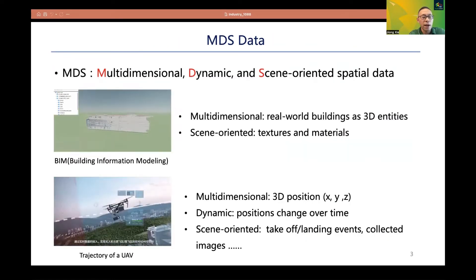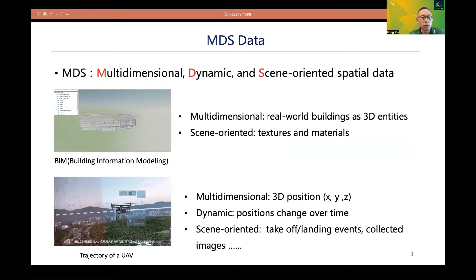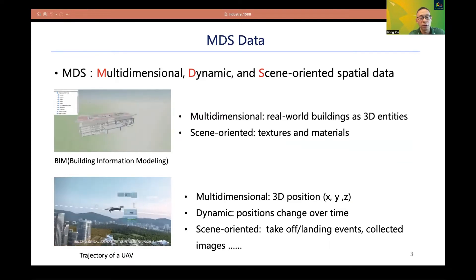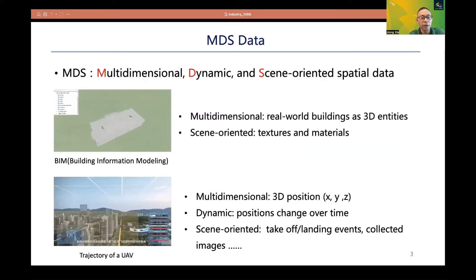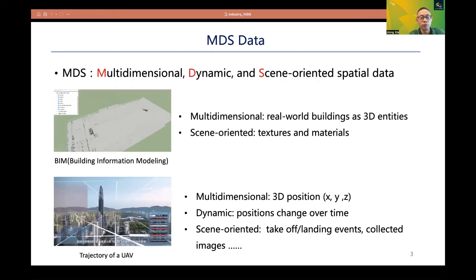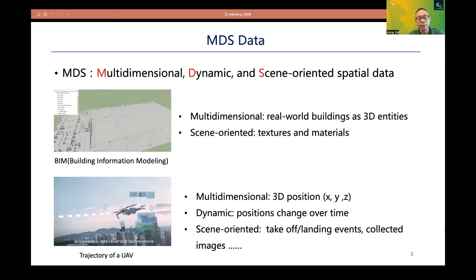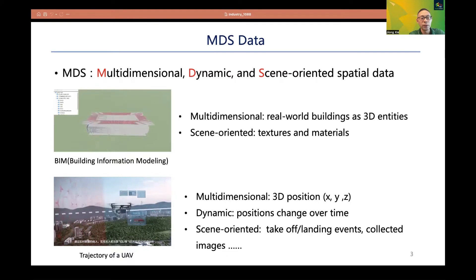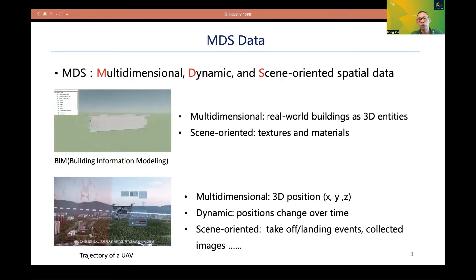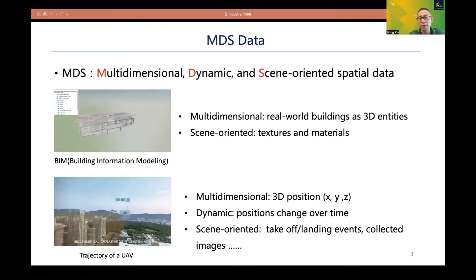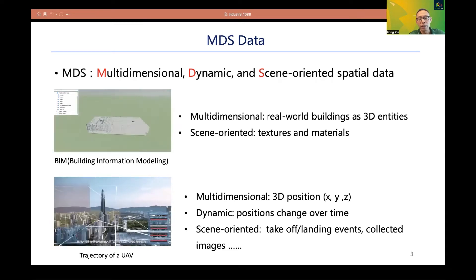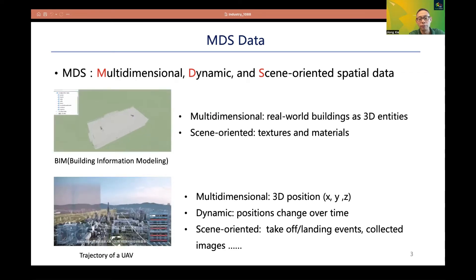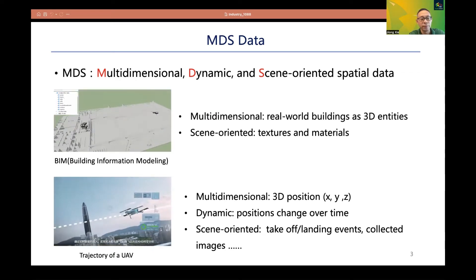MDS data is a very important kind of data that is increasing fast in City Digital Twins applications. Here, MDS refers to multi-dimensional, dynamic, and scene-oriented spatial data. Compared with traditional spatial data that is often static and two-dimensional, MDS data can model real-life objects much more precisely.